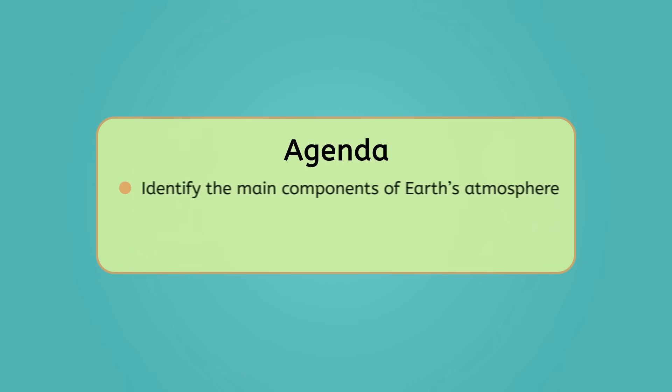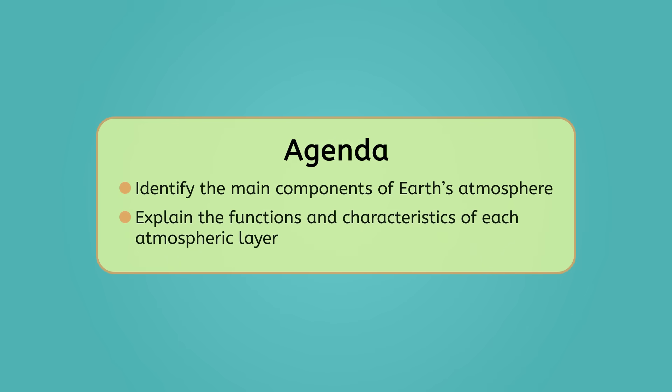Have you ever looked up at the night sky and wondered about the mysteries of space? Well, space is closer than you might imagine. It starts just beyond the edge of Earth's atmosphere, but what exactly is Earth's atmosphere and how does it protect us from the harsh conditions of space? By the end of this lesson you'll be able to identify the main components of Earth's atmosphere and explain the functions and characteristics of each atmospheric layer. So have your guided notes ready and let's take off on a journey through Earth's atmosphere.